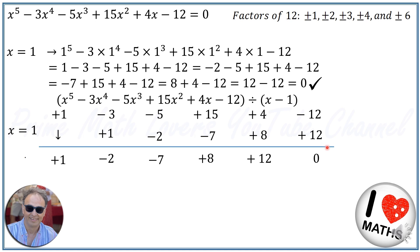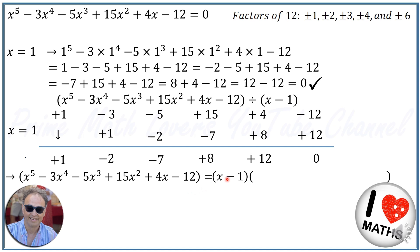This confirms the equation is divisible by x minus 1. So our equation x to the power of 5 minus 3x to the power of 4 minus 5x to the power of 3 plus 15x to the power of 2 plus 4x minus 12 equals x minus 1 times the new polynomial with coefficients positive 1, negative 2, negative 7, positive 8, and positive 12. This means the equation equals x minus 1 times x to the power of 4 minus 2x to the power of 3 minus 7x squared plus 8x plus 12.